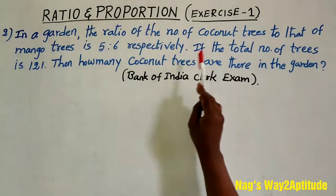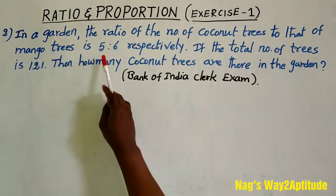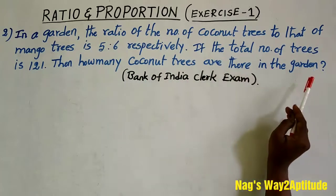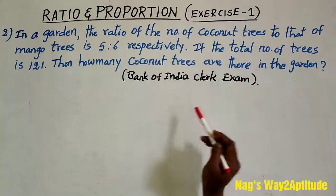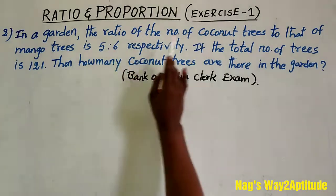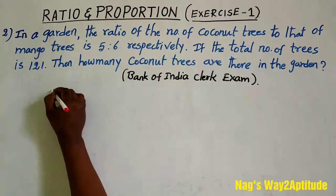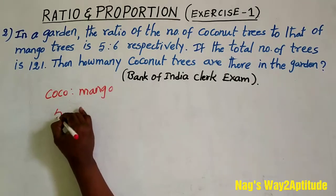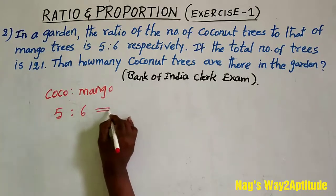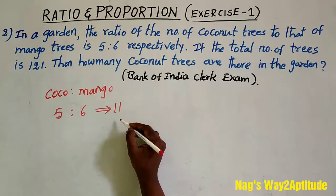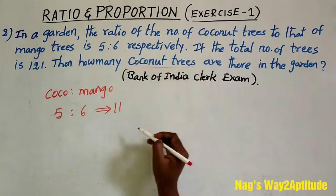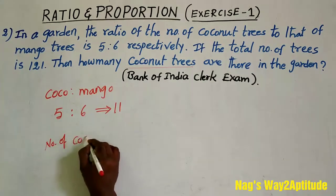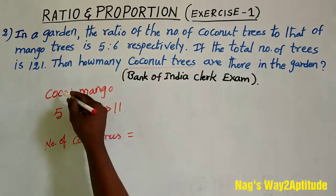In your garden, the ratio of the number of coconut trees to that of mango trees is 5 is to 6 respectively. If the total number of trees is 121, then how many coconut trees are there in the garden? This question was given in the Bank of India clerk exam. Here the ratio of coconut trees to mango trees is 5 is to 6. Now we need to find the number of coconut trees. What is the part of coconut trees here? It is 5.